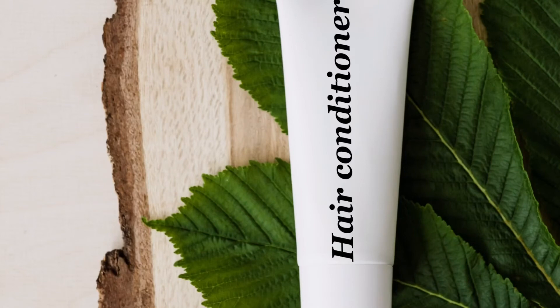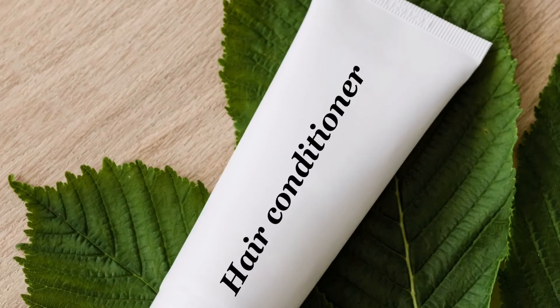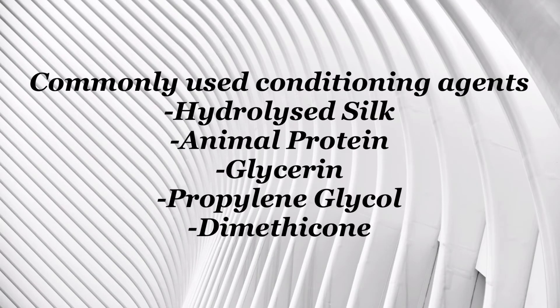Hair conditioners help make hair silky, shiny, and smooth. The common key ingredients in conditioners include hydrolyzed silk, animal protein, glycerin, propylene glycol, and dimethicone.